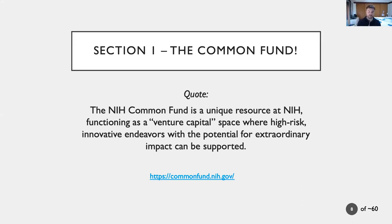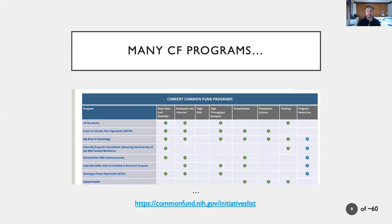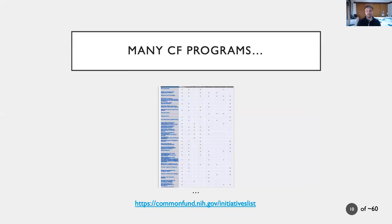There are a lot of Common Fund programs. If you zoom all the way out and try to fit it all on one slide, there are somewhere in the neighborhood of 20 to 30, with about 15 that are active and relevant to what we're doing right now. There are some that are sunsetting and some that are sun-rising — it's a constantly changing, dynamic landscape of programs.